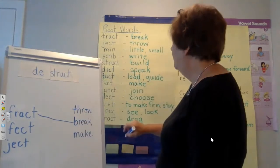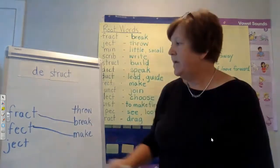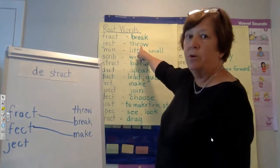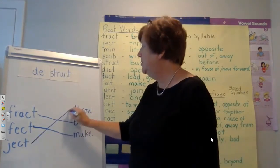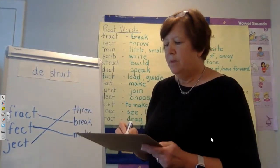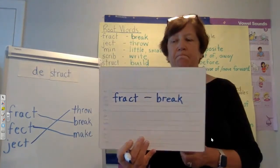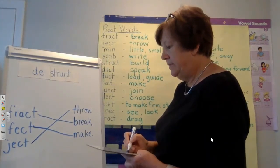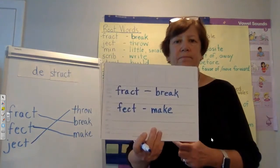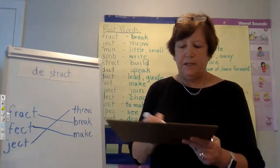Let's try the next one — fect, F-E-C-T. Fect means to make. So let's match that one. And then ject — let's find that one. Ject means to throw. So you could make something like this at home to practice. Fract means break; fect, F-E-C-T, means make; ject, J-E-C-T, means throw.